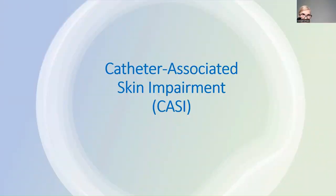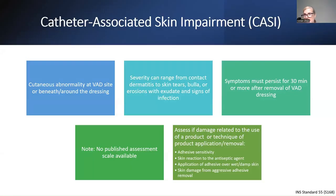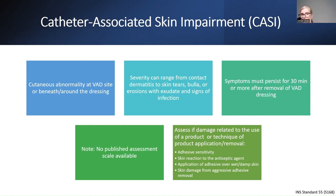The next complication is catheter-associated skin impairment, or CASSIE. This is a cutaneous abnormality either at the VAD site, under the dressing, or near the dressing. Severity ranges from simple contact dermatitis all the way to skin tears, erosions with exudate, and signs of infection. To be labeled a CASSIE, symptoms must persist for at least 30 minutes after the dressing is removed.